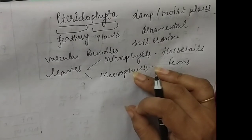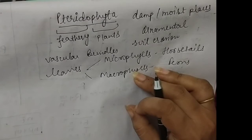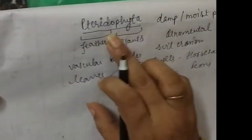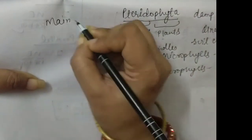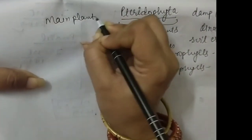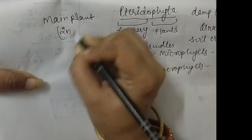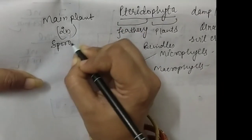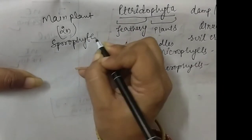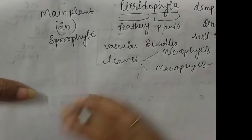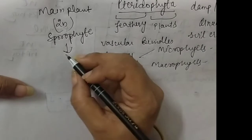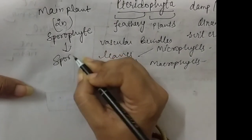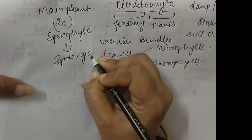Previously when we discussed Bryophyta, I told you that the main body of Bryophyta is the gametophytic body. In Pteridophyta, the main plant body — the dominant phase — is the sporophyte. The sporophyte is the main body of Pteridophyta, and this sporophyte contains sporangia.